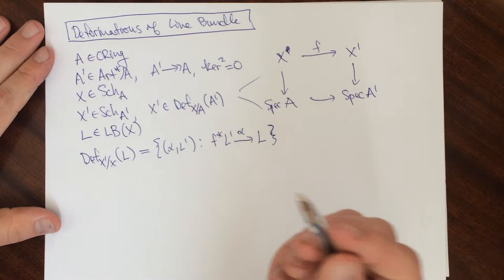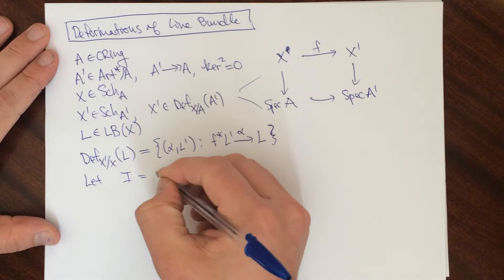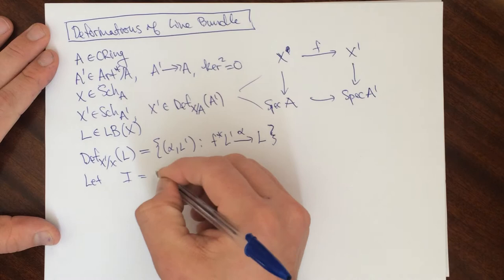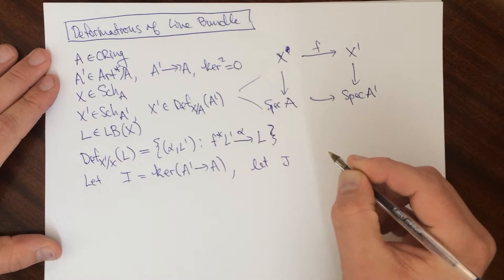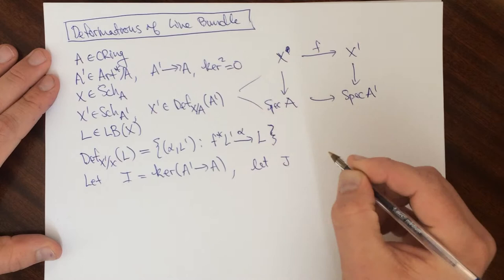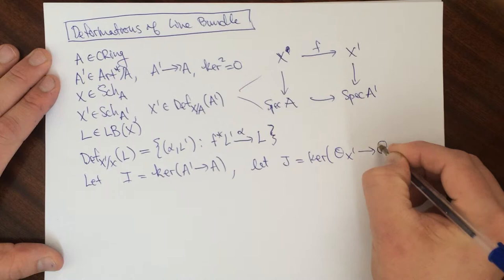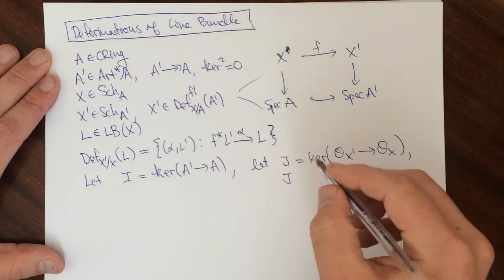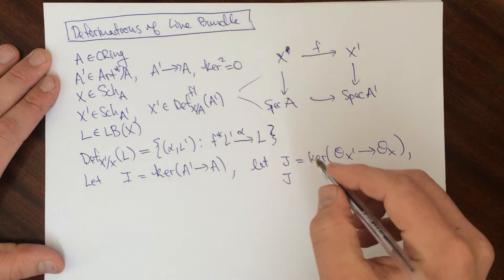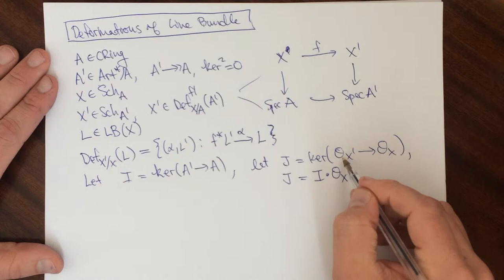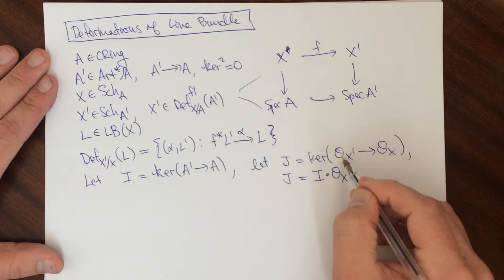So I need a little bit more notation. Let I be the kernel of this map, and let J be the structure sheaf. So J is going to be the kernel of this map here. Another way to say this is that J, so let's take this to be a flat deformation. And then here J is just going to be equal to I times O of X prime. So that means that this thing here is really isomorphic to this modulo this.